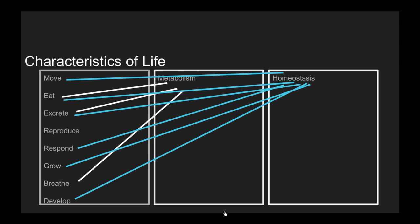I used some different colored lines to tie together some of the more advanced terms that you might run across. For example, metabolism could replace eat, excrete, and breathe, depending on how you explain it.